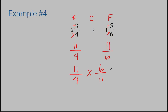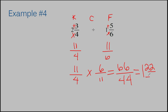So now I've set this up as a regular multiplication problem. Eleven times six is sixty-six, and four times eleven is forty-four. Dividing gives me one and twenty-two over forty-four. Twenty-two over forty-four simplifies to one-half, so this answer is one and one-half.